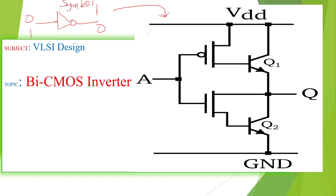You have seen that already — that is NMOS inverter and CMOS inverter. In that, only 2 transistors are required. But here in this BiCMOS inverter, an NMOS transistor is required, a PMOS transistor is required, and these are the bipolar transistors — that is BJT — with emitter, base, and collector terminals on both transistors.